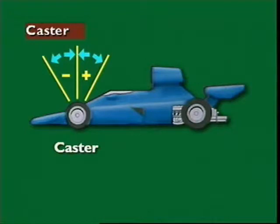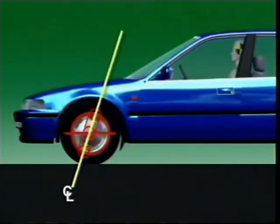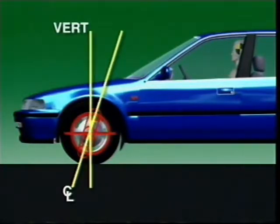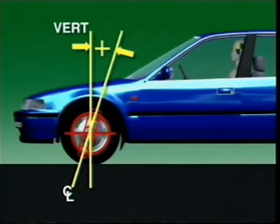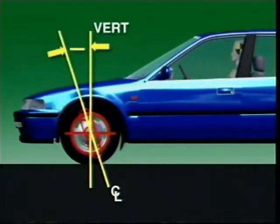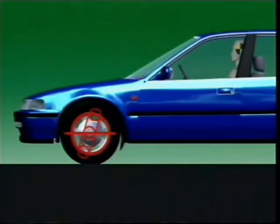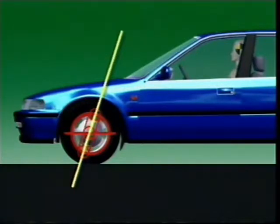This section examines caster. The steering axis centre line, seen from the side of the vehicle, is normally tilted from the vertical. Caster is the angle formed by this line and a line drawn vertically through the centre of the wheel. Backward tilt from the vertical is positive caster; forward tilt is negative caster. When a vehicle has positive caster, a line drawn through the steering axis meets the road surface ahead of the wheel's centre line, with the tyre contact point behind the steering axis.